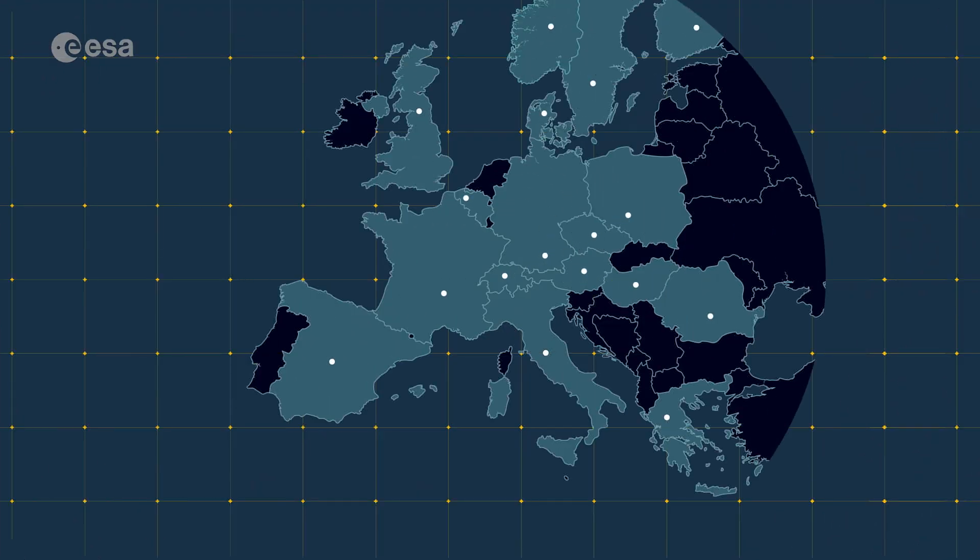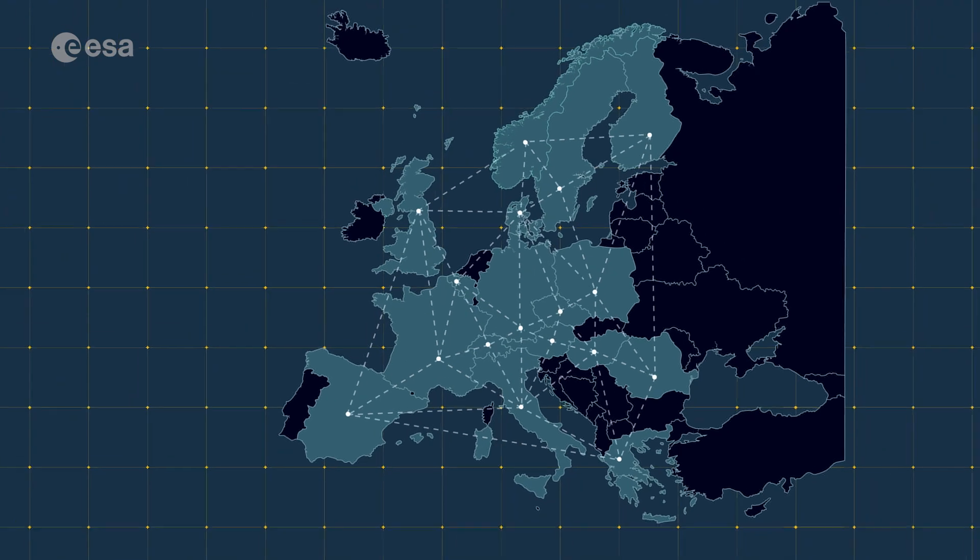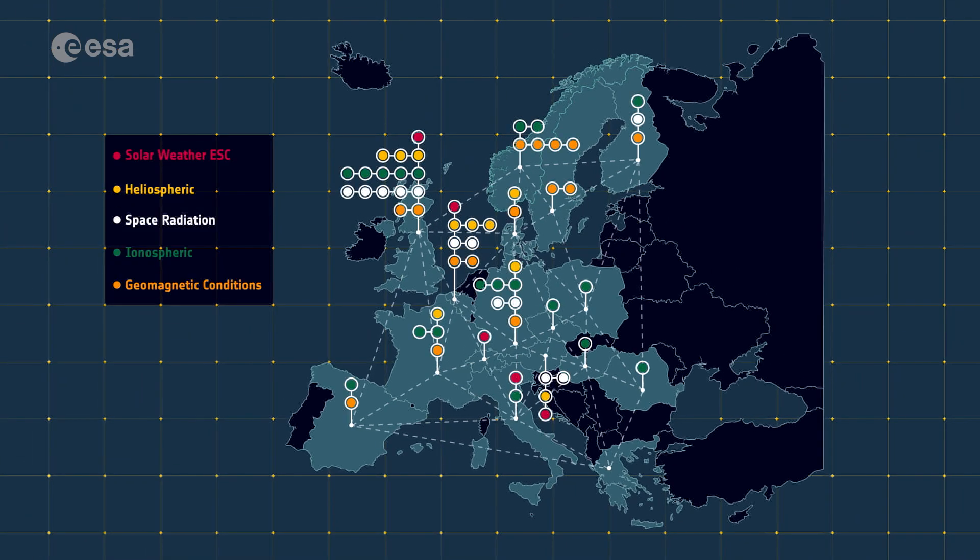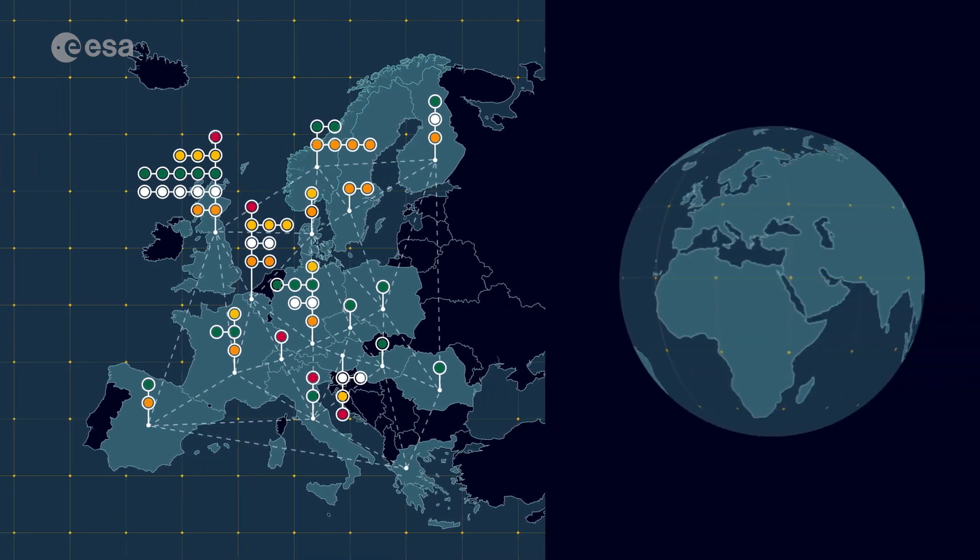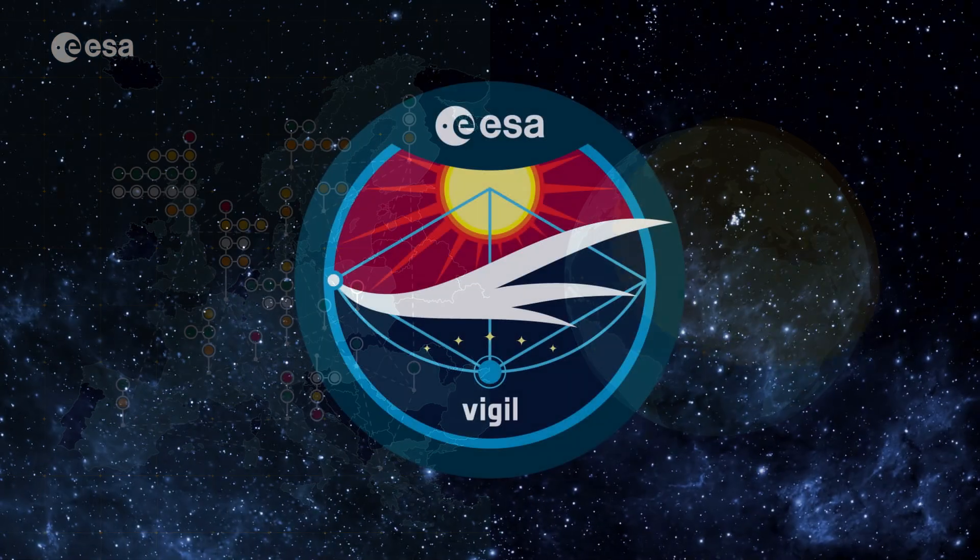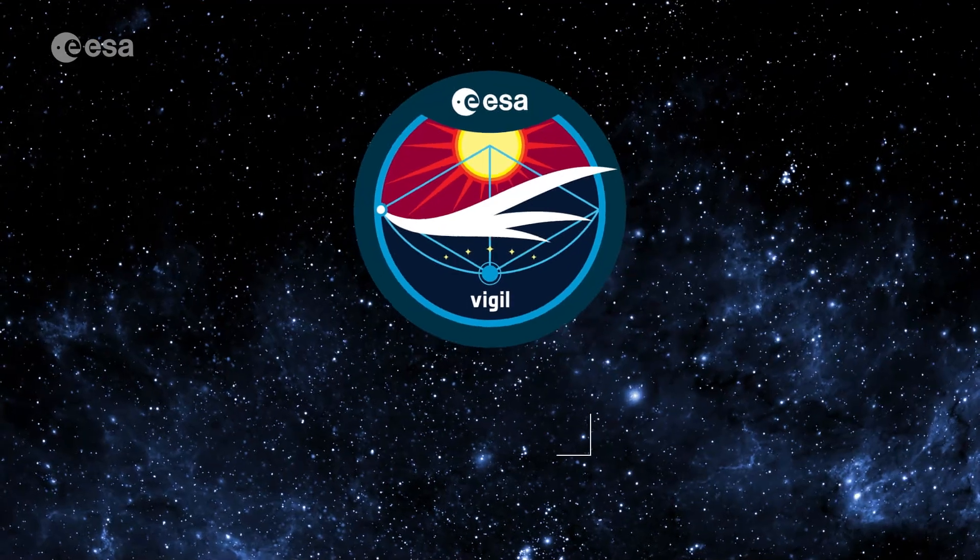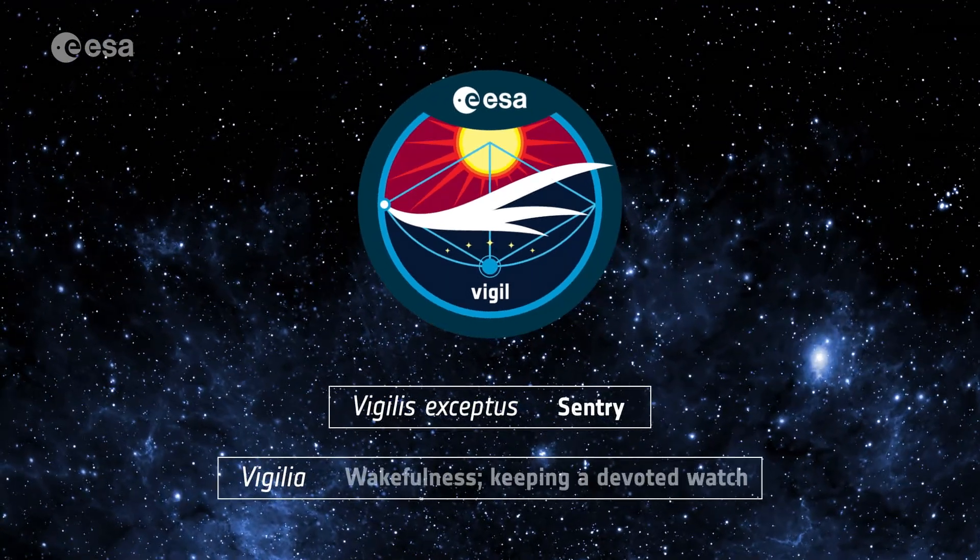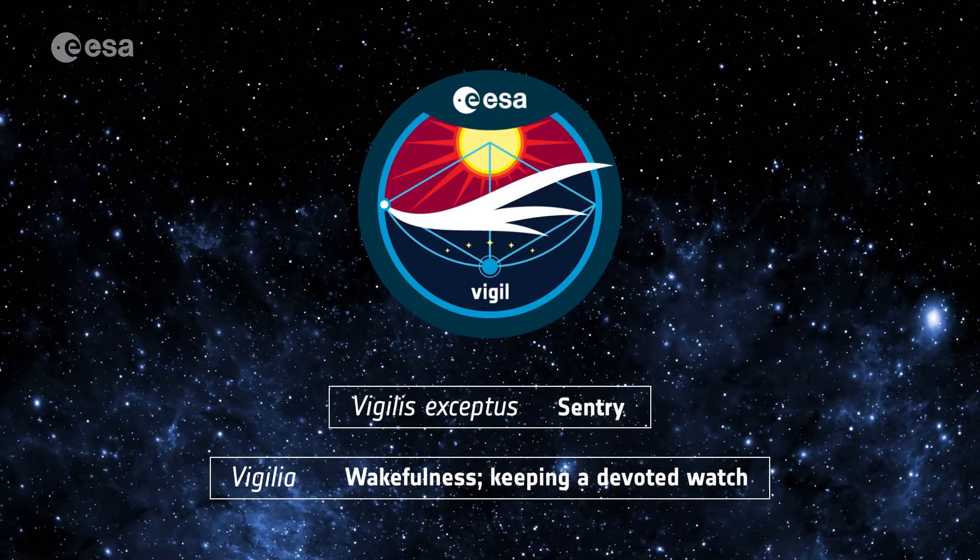Data from Vigil will stream into ESA's Space Weather Service Network, where it will be processed into practical information and shared quickly and freely, giving us time to act. Named Vigil from the Latin Vigilis Acceptus, meaning Sentry and Vigilia for wakefulness and keeping a devoted watch.